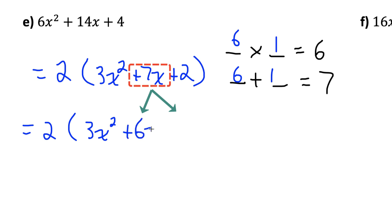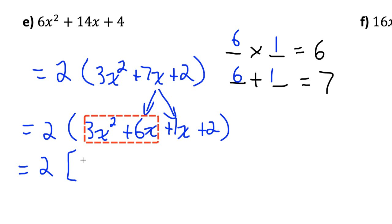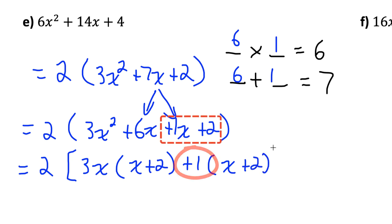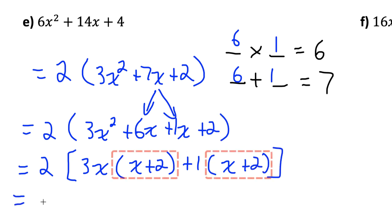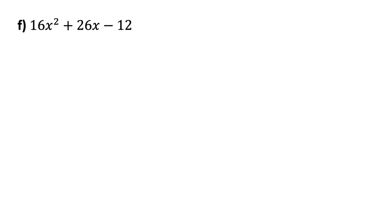I split the middle term into 6x plus 1x, giving 3x² + 6x + 1x + 2. Grouping: from 3x² and 6x, I factor out 3x, which gives (x + 2). From 1x and 2, I factor out 1, also giving (x + 2). There's a common binomial of x + 2. Removing it as a factor, what remains is 3x + 1. So the full factored form includes the 2 factored out at the start: 2(x + 2)(3x + 1).